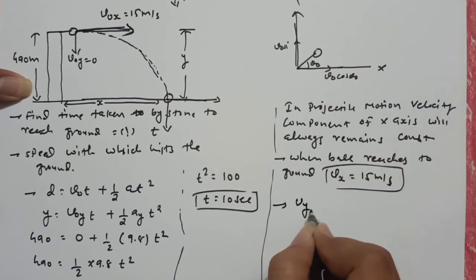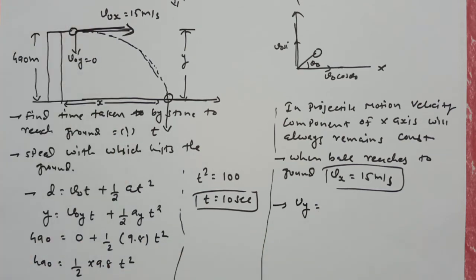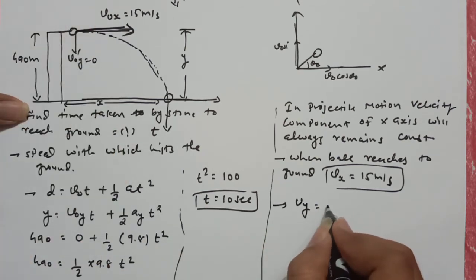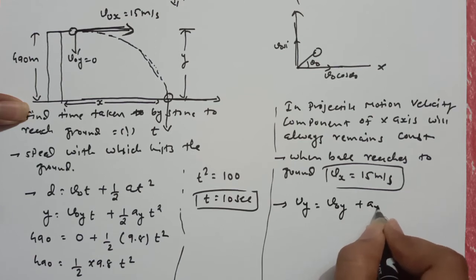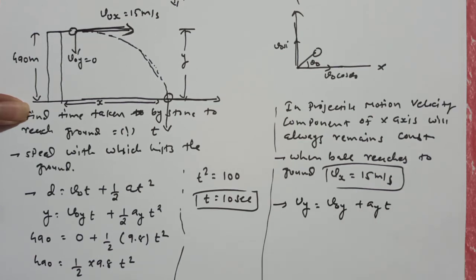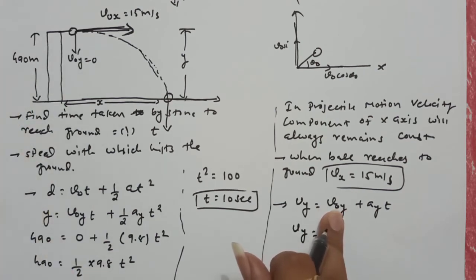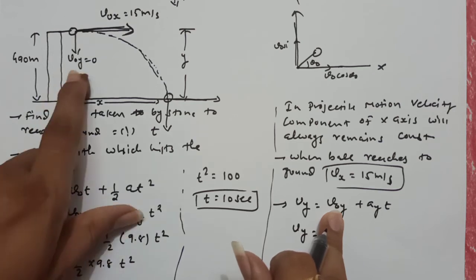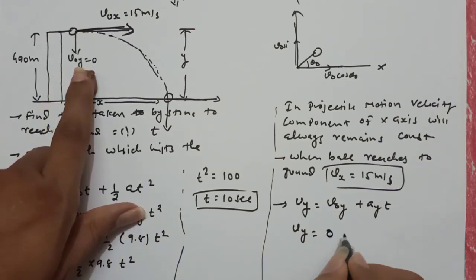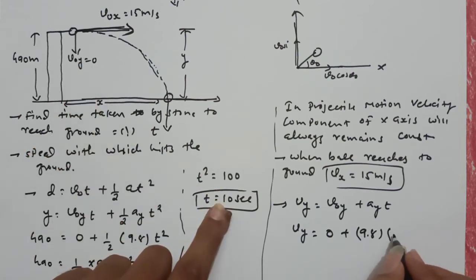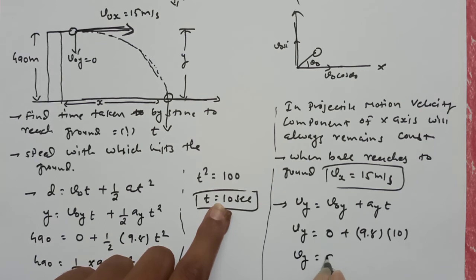And velocity of y-axis — तो y-axis की velocity change होती है। तो उसके लिए formula use करेंगे: v is equal to V0 plus at. So final velocity on y-axis will be initial velocity of y — y की initial velocity थी 0, plus acceleration 9.8 into t, t हो जाएगा 10. So Vy will be 98 meter per second।